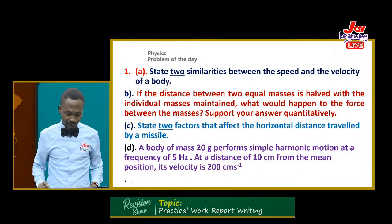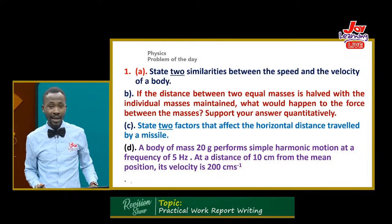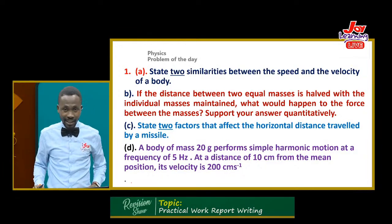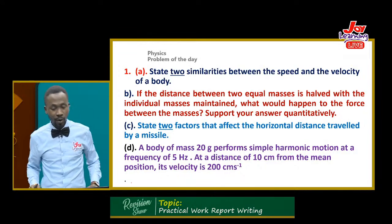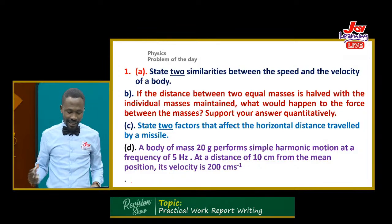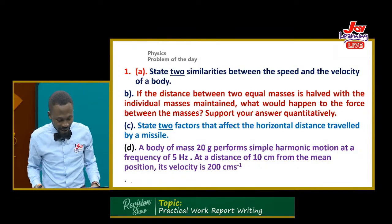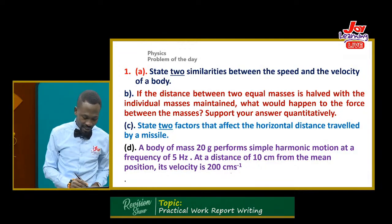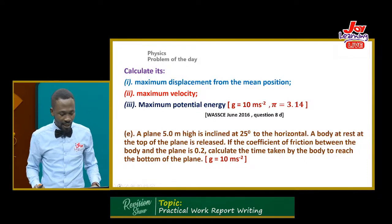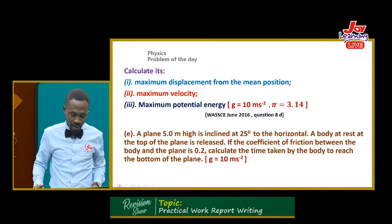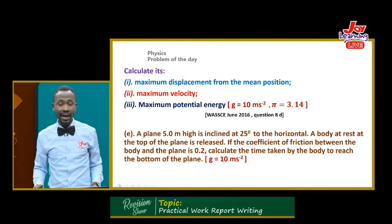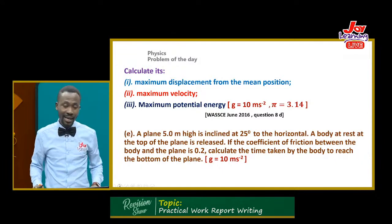State two factors that affect the horizontal distance travelled by a missile. Then B says: a body of mass 20 grams performs simple harmonic motion at a frequency of 5 Hz. At a distance of 10 cm from the mean position, its velocity is 200 cm per second. Calculate its maximum displacement from the mean position, maximum velocity, and maximum potential energy.